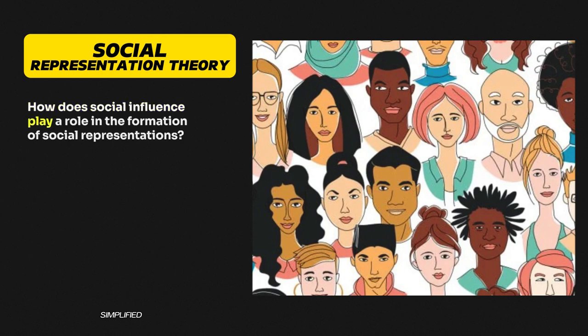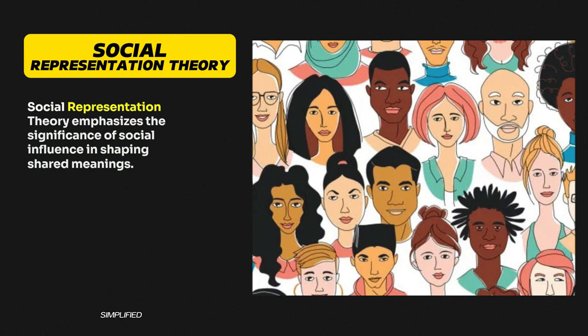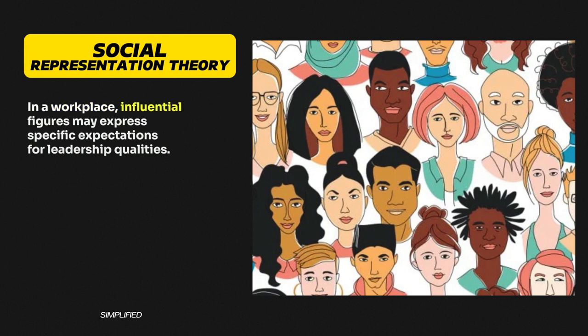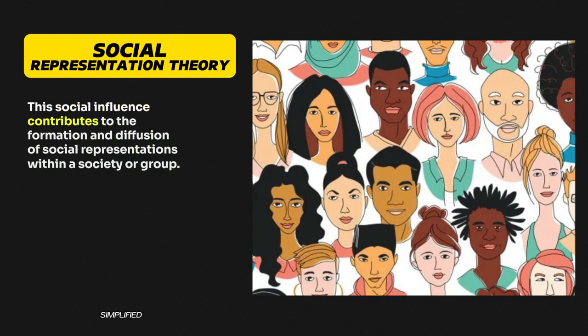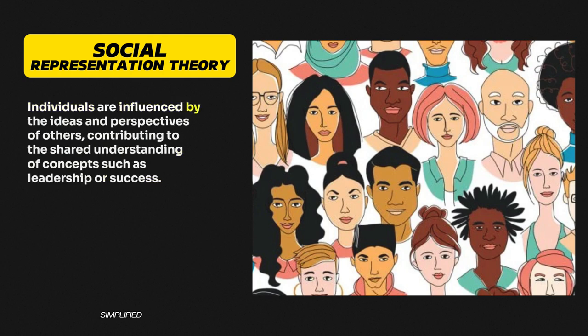Question 4: How does social influence play a role in the formation of social representations? Social Representation Theory emphasizes the significance of social influence in shaping shared meanings. In a workplace, influential figures may express specific expectations for leadership qualities. This social influence contributes to the formation and diffusion of social representations within a society or group. Individuals are influenced by the ideas and perspectives of others, contributing to the shared understanding of concepts such as leadership or success.